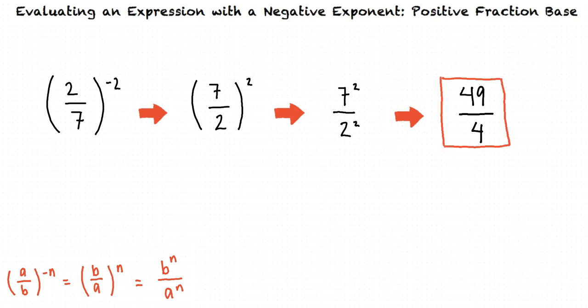Okay, so to evaluate an expression with a negative exponent, we can apply the rule a over b to the negative n equals b over a to the positive n to rewrite our expression with a positive exponent. From there, we can simplify the expression. That's exactly right. Great work!